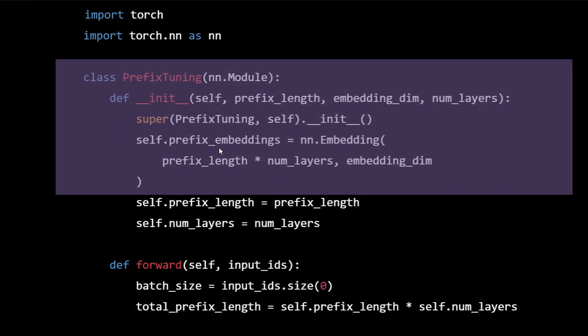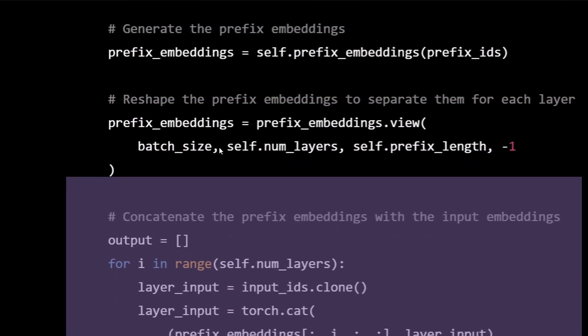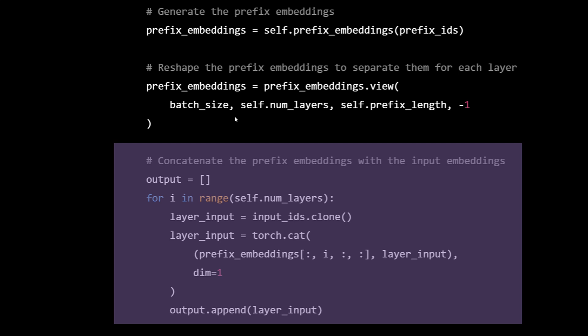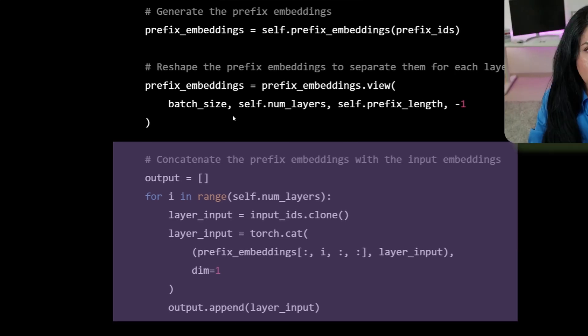Very comparable to prompt tuning, you will create your embedding layer. The difference here is that you add that created, completely randomly created embedding, to all of the layers inside your neural network. That's basically the only difference.